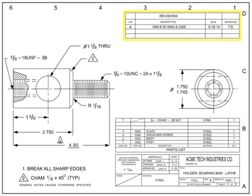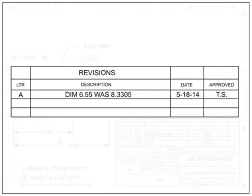The revisions block is a tabulated list of the revisions that have changed the original drawing. It is typically located in the upper right-hand corner of the drawing, although some drafting standards attach it to the title block. The sequence for revision letters starts with A as the first revision, followed by B for the second, and so on. A drawing that has had no revisions has a blank revisions block.